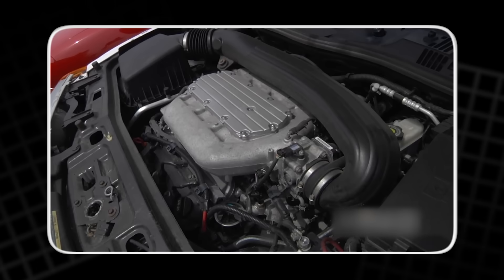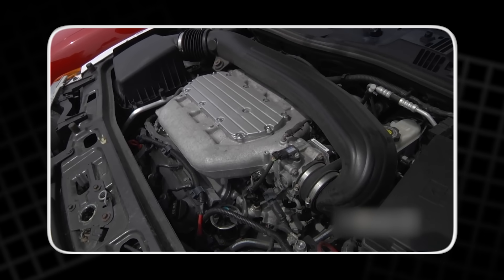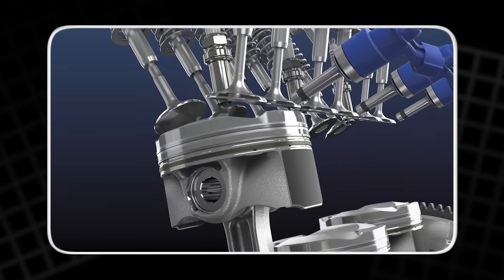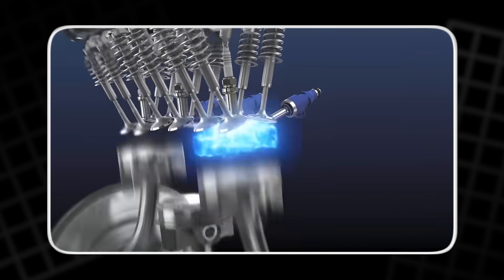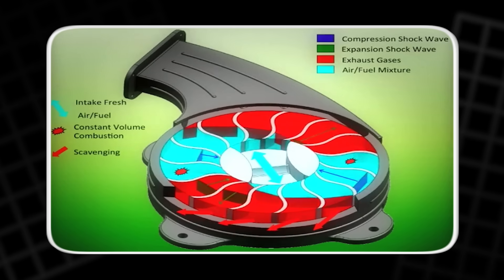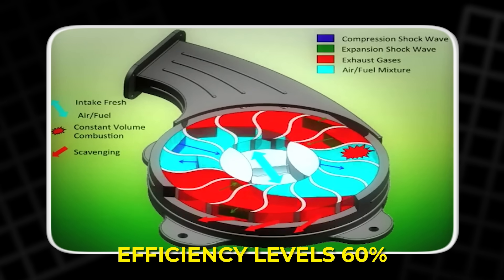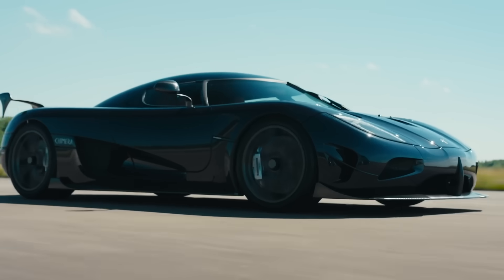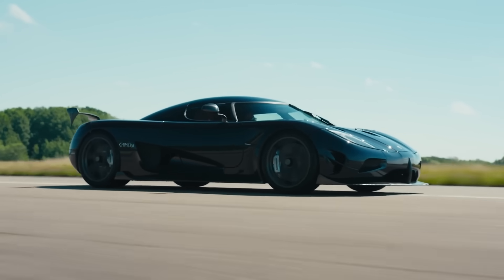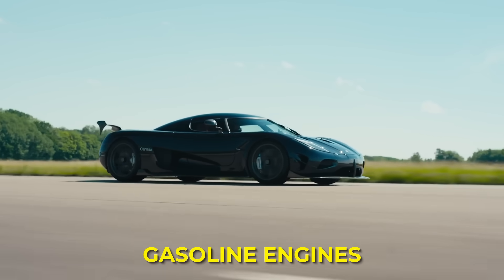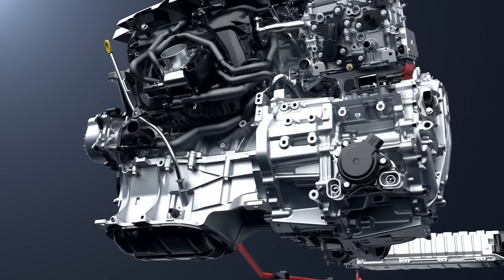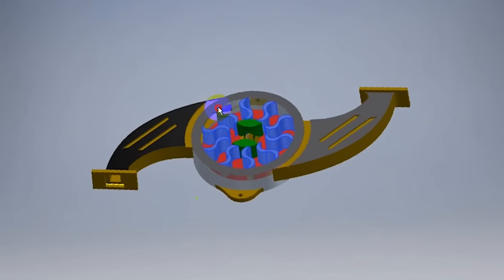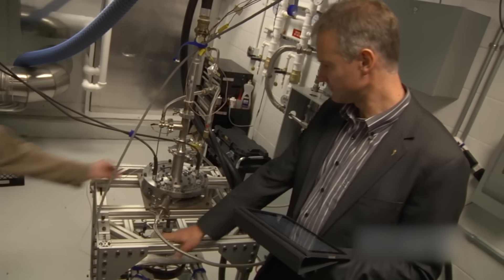Through countless simulations and experiments, they discovered patterns that allowed shock waves to form and compress the incoming gas with surprising precision. When this worked, the results were impressive. The engine created high compression levels without pistons, without valves, and without a crankshaft. Because the compression happened so quickly, almost no heat escaped into the walls. Heat loss is one of the biggest efficiency killers in engines.